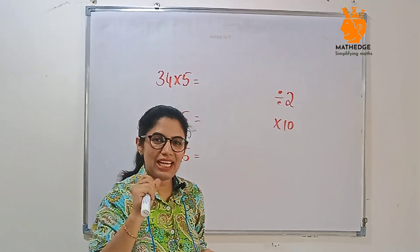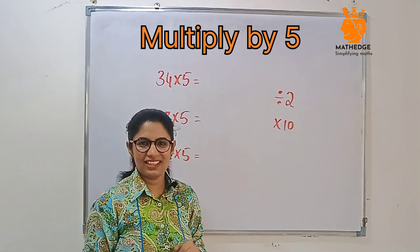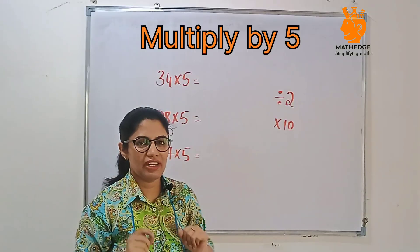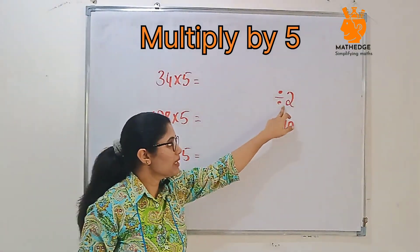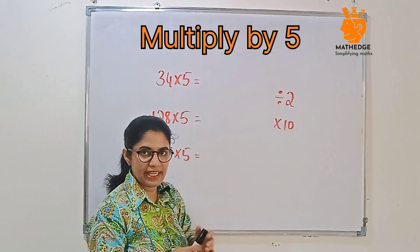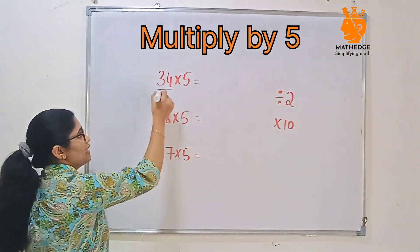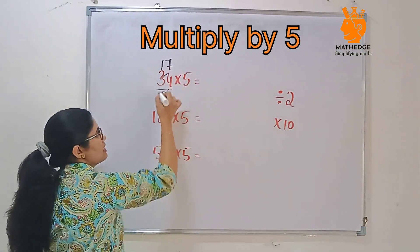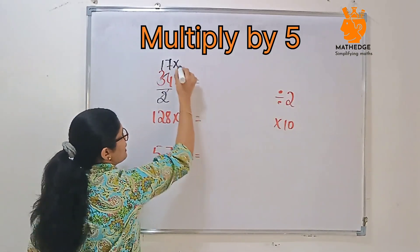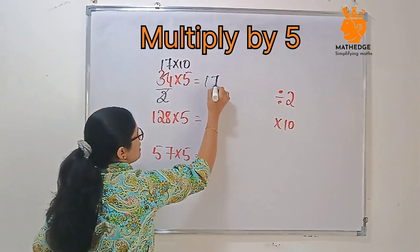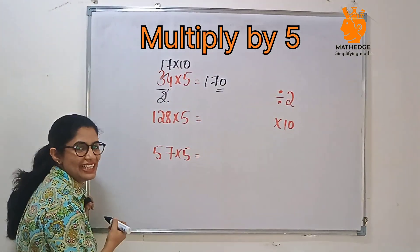Now, let's multiply by 5, this is even more fun. To multiply by 5, first step, divide by 2 and then multiply by 10. Means, 36 multiplied by 5, you just divide by 2. This will become 18, right? Then multiply by 10. 180 is the answer. Easy.